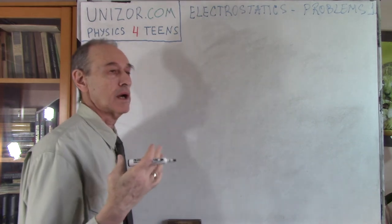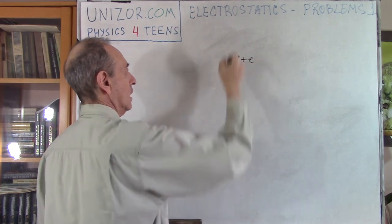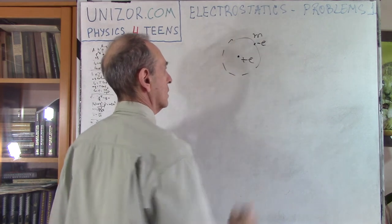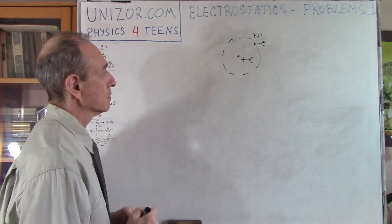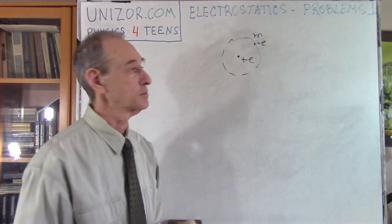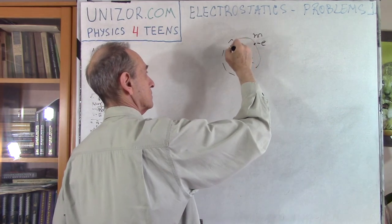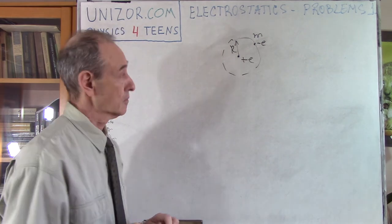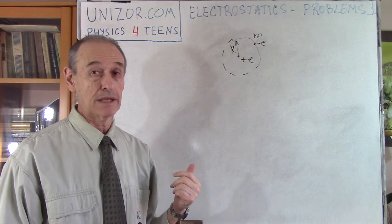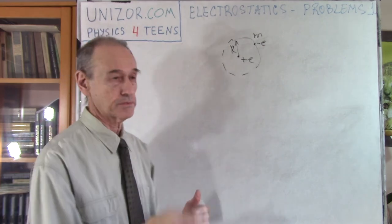Problem number three: let's imagine an atom of hydrogen. You have a proton with charge plus e, and an electron circulating on an orbit with charge minus e. We know its mass. The charge of the proton equals the charge of the electron in magnitude — opposite signs, negative for electron, positive for proton. We also know the radius of the hydrogen atom. My question is: what is the angular velocity of the electron as it circulates around the proton, and the frequency — number of rotations per second?